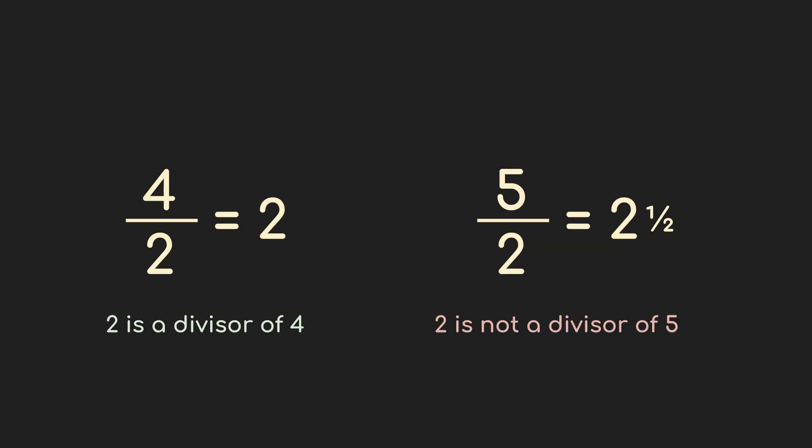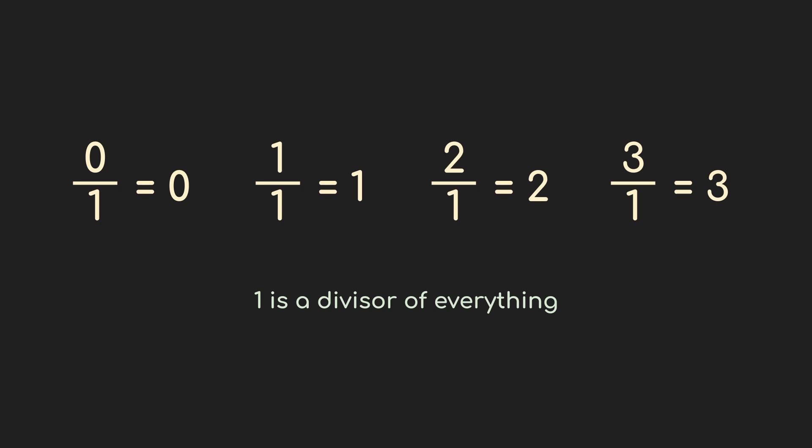So, divisors. If one whole number can divide into another and leave no remainder, then it is a divisor of that number. Four divided by two equals two with nothing left over, so two is a divisor of four. But if you divide five by two, you get two and a half — that extra half means two is not a divisor of five. If a number divides another equally, it's a divisor; if it doesn't divide equally, it's not. It might be obvious that one is always a divisor of every number. Divide two by one, you get two; divide three by one, you get three — no remainder. One is a divisor of every whole number, and since it's universal, it often gets left out of the list of divisors.